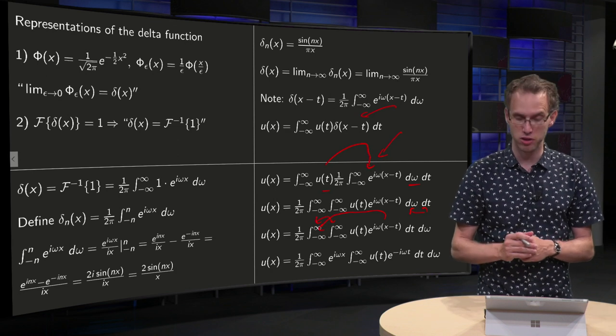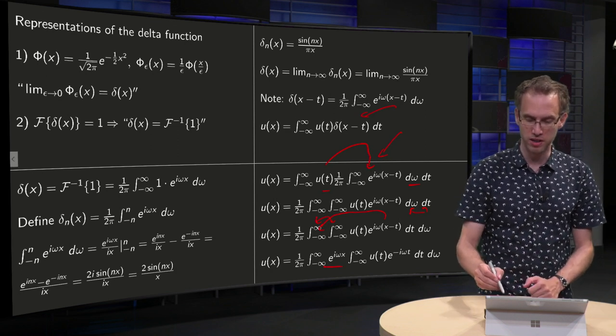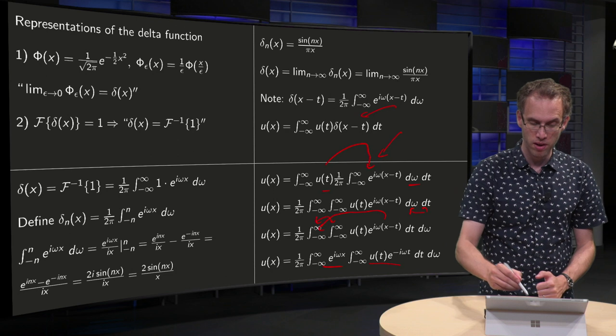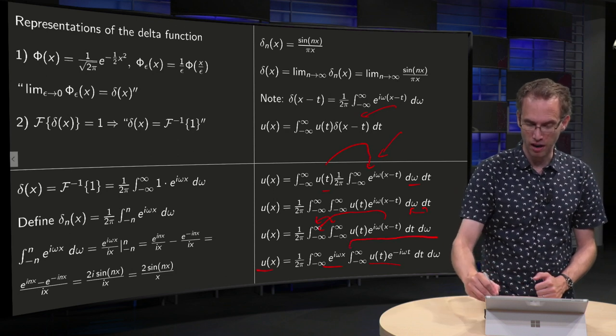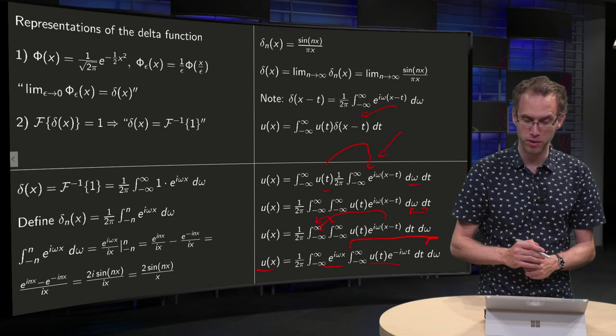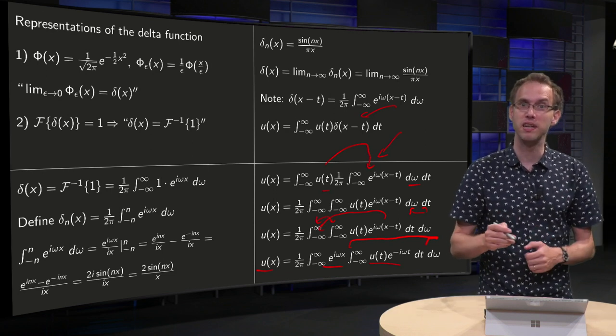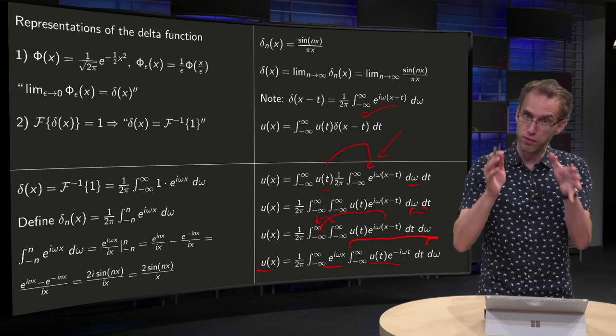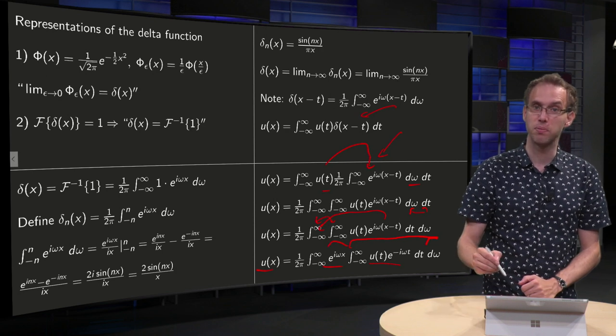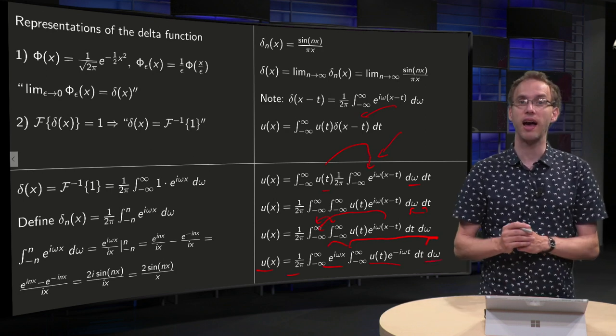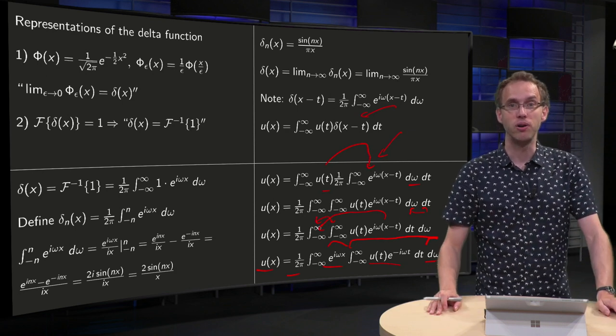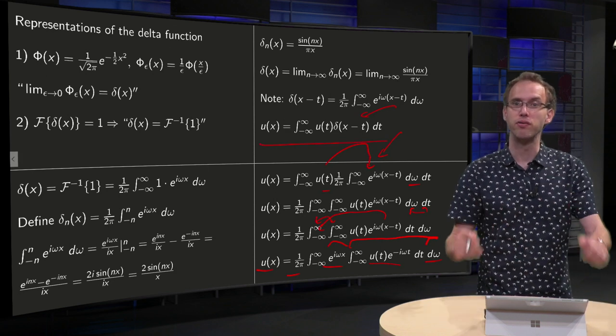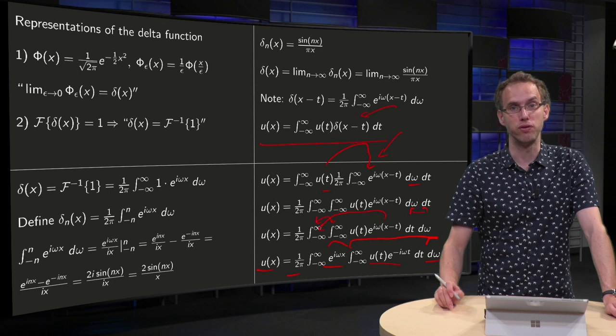And then we can put the iωx in front, because iωx doesn't depend on t, so we get the e to the power of iωx, u times e to the power of minus iωt dt, and what do we see now, what have we gotten, well our u(x) equals, here you have this part of the Fourier transform of u, and now you also see immediately how you get the inverse Fourier transform of u, you have to add your factor e to the power of iωx, integrated with respect to ω, and divide by 2π, so you also can use this representation of a delta function as an integral to derive very fast the inverse Fourier transform formula.